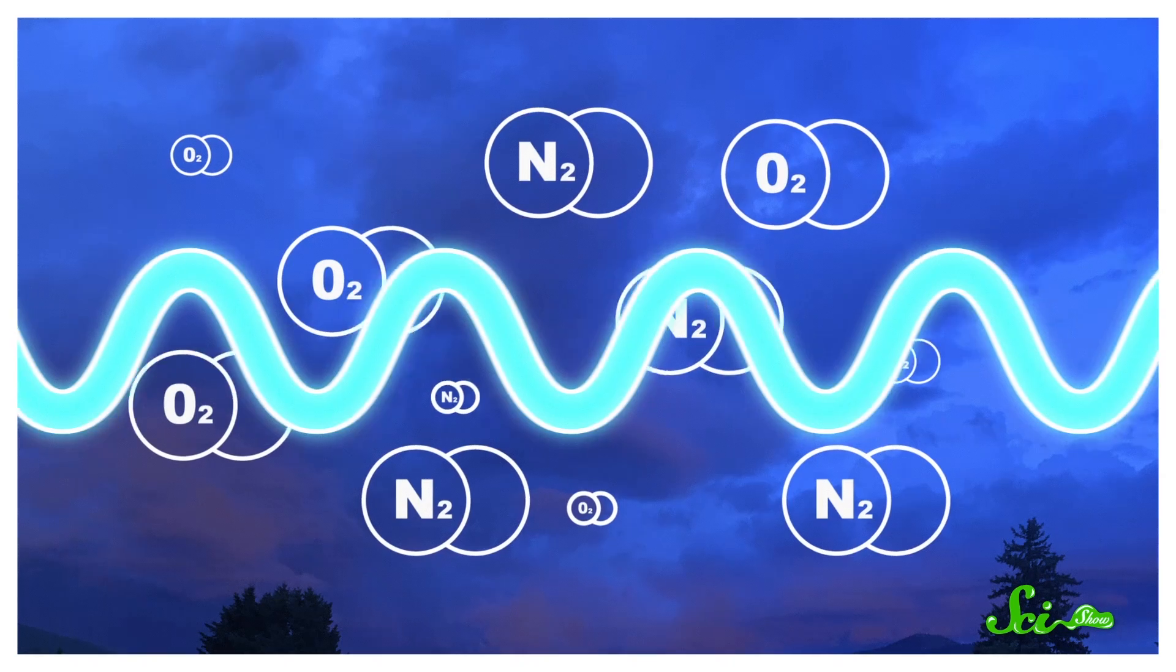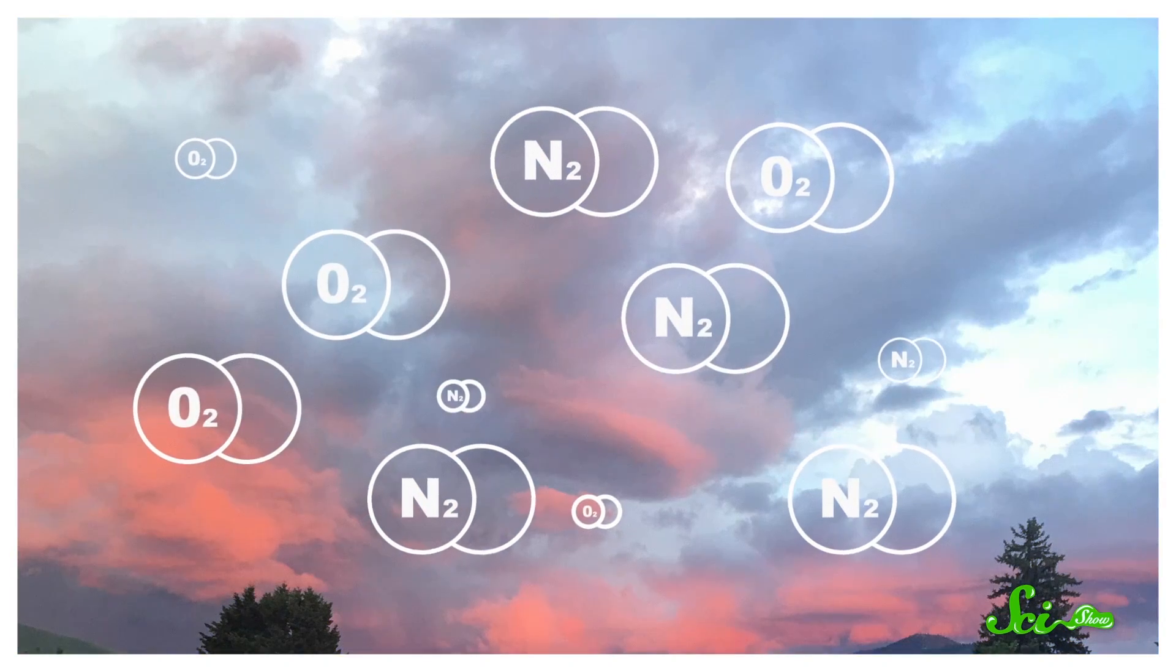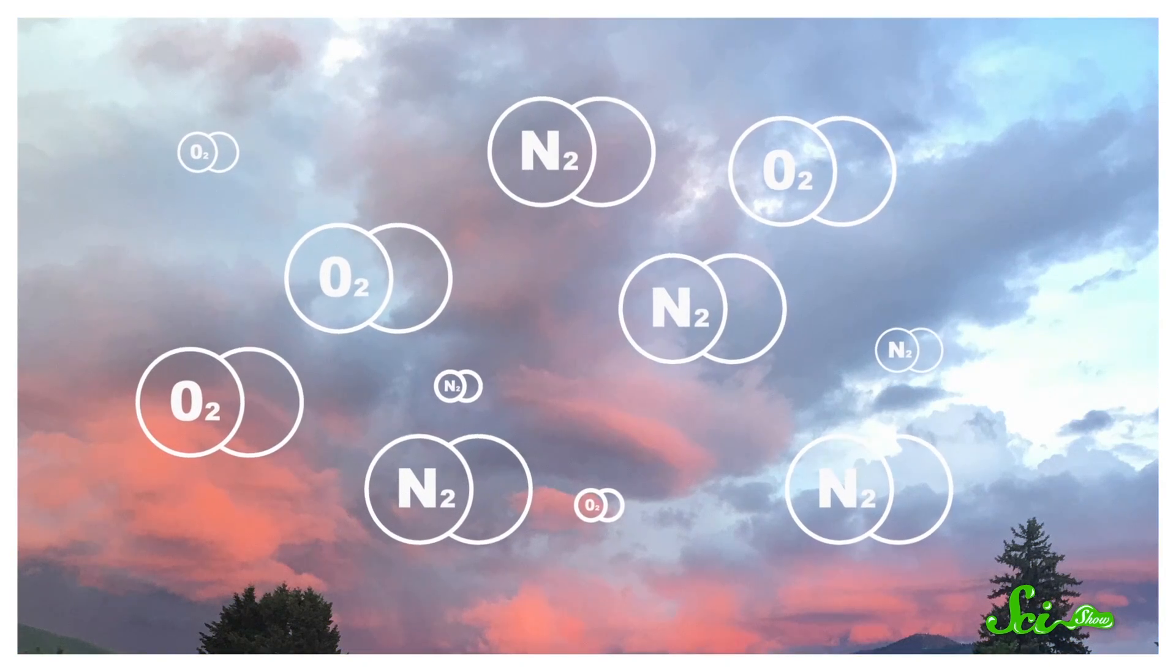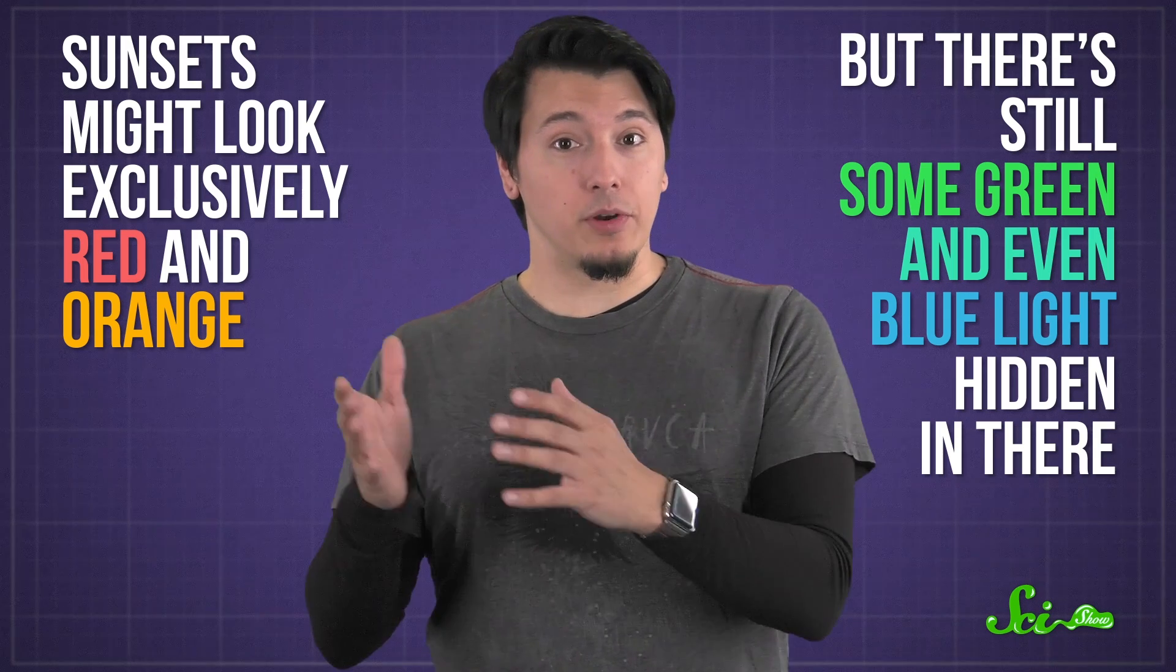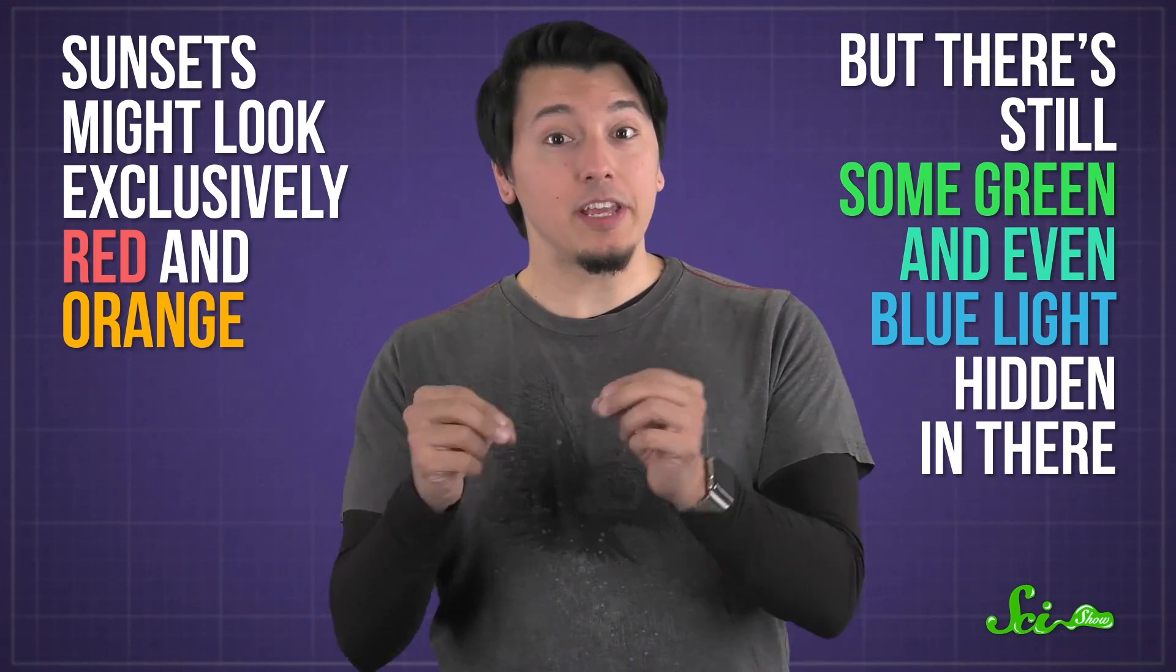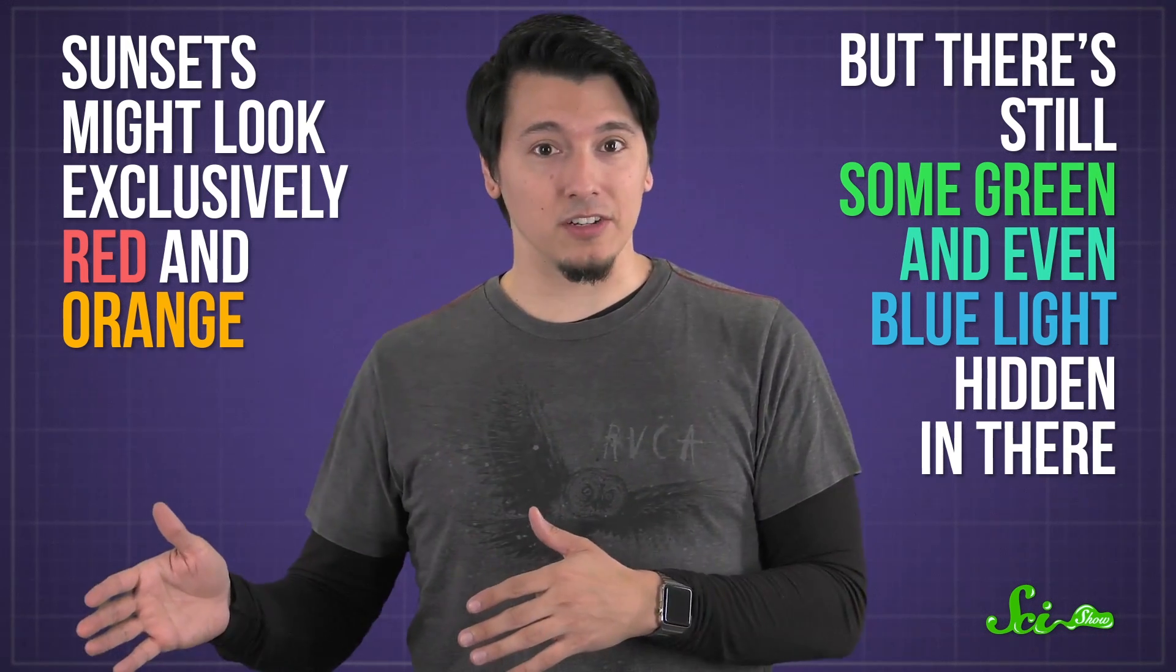Meanwhile, around sunset, sunlight travels through so much atmosphere that just about all the blue is bounced away from the horizon, leaving all those picturesque reds and oranges behind. But that quick summary hides something important. Sunsets might look exclusively red and orange, but there's still some green and even blue light hidden in there, just far less than the other colors.